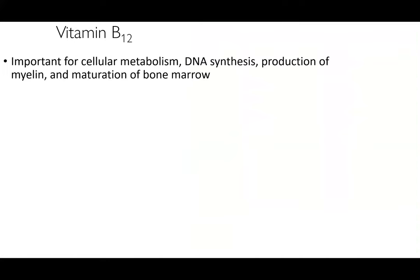First, let's talk about vitamin B12. As humans, we've lost the capacity to synthesize vitamin B12 throughout evolution, simply because we rely on our endogenous and exogenous microorganisms to provide it. We rely solely on our food and our microbiota to give us vitamin B12, and the genetic capacity for its production exists in nature. B12 is important for cellular metabolism, DNA synthesis, the production of myelin — which is important for muscle movement and regeneration — and the maturation of bone marrow. It's a really common component of multivitamins.